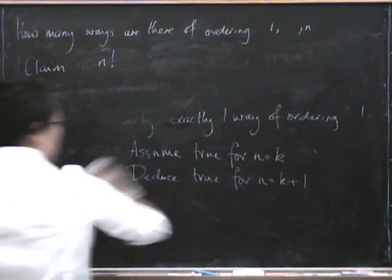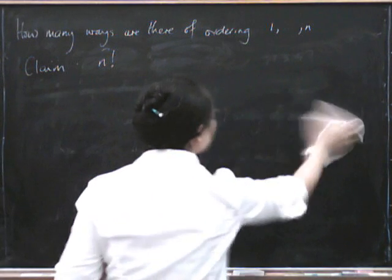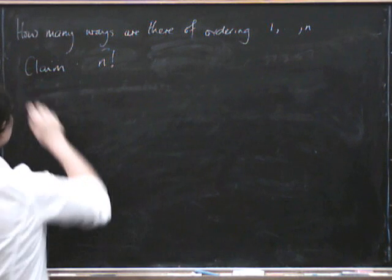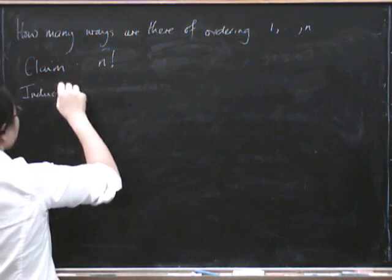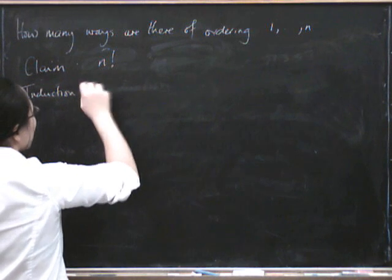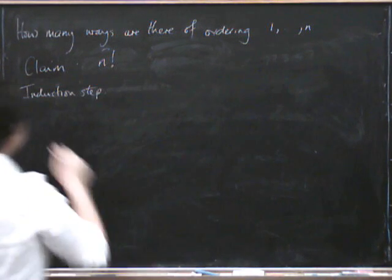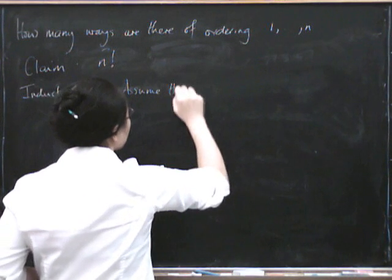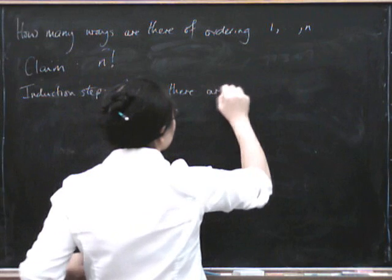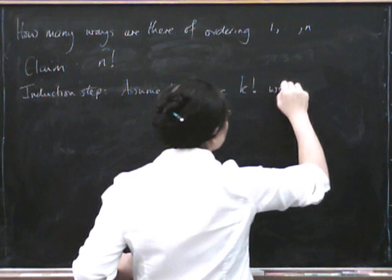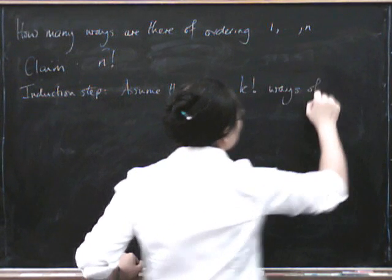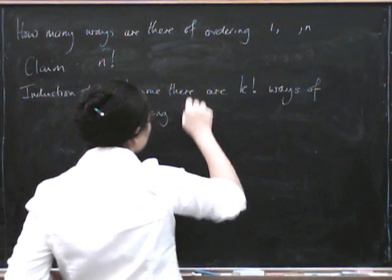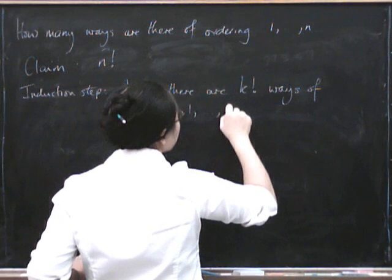So the claim is that there are n factorial ways of ordering the numbers 1 up to n. Here's how we do the induction step. We assume that the result is true for n equals k. So we assume there are k factorial ways of ordering the numbers 1 up to k.